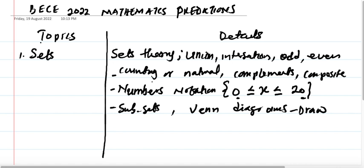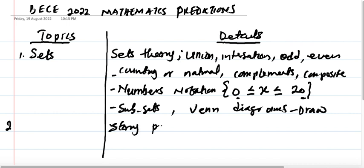When we are doing revision, we have to go through all these details. The BEC now doesn't actually focus on a particular topic — they do total mathematics, which means they are going to set every topic. Any topic they deem fit, they will set. Under sets, we also have story problems. In story problems, we can talk of the normal type, fractions, and decimals.